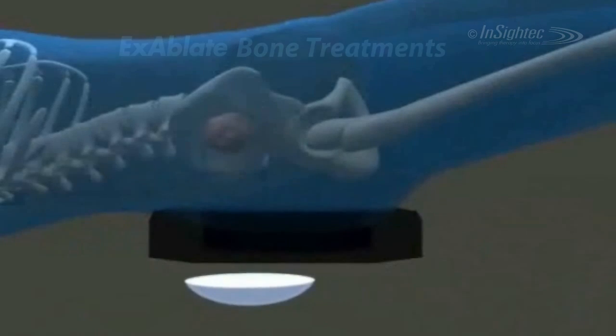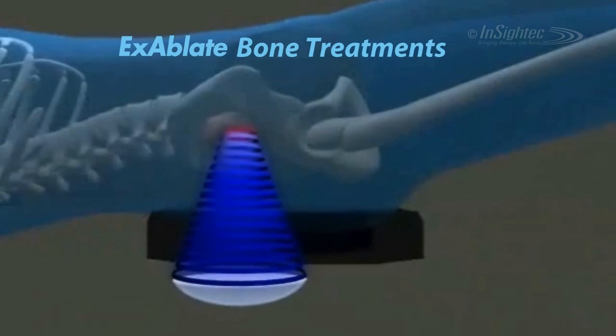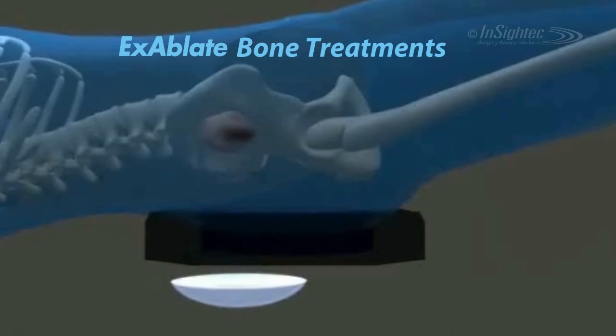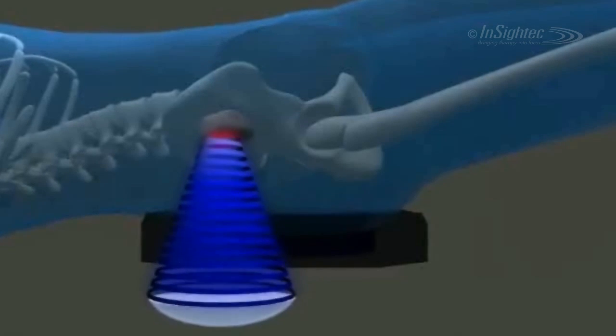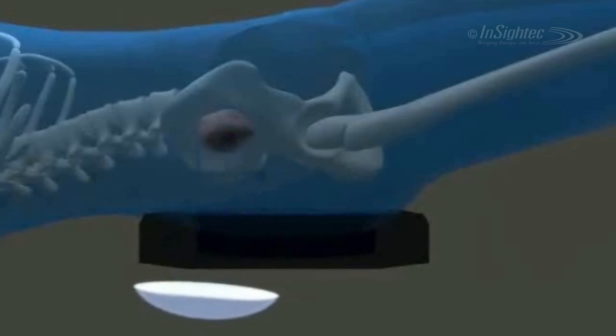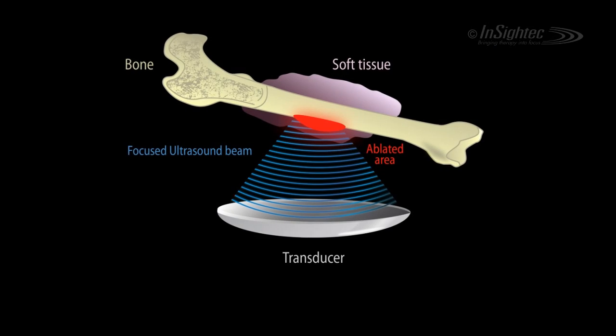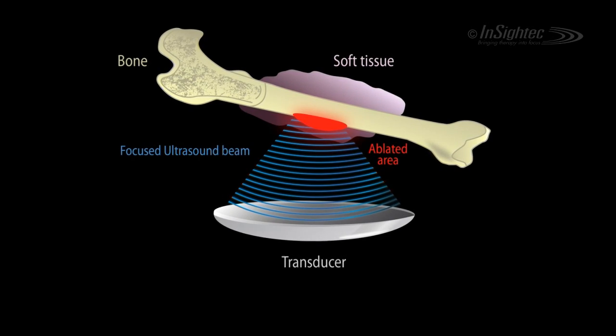Focused ultrasound is readily absorbed by bone. A wide beam of focused ultrasound intersects the bone cortex, producing a broad area of heating at the periosteal margin. Pain-conducting nerve endings are destroyed, providing pain palliation.